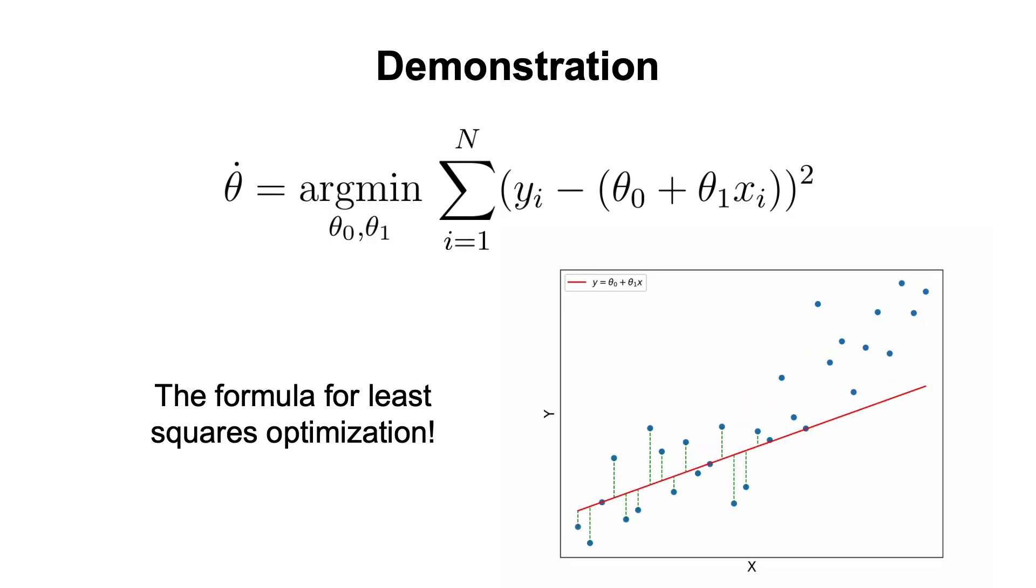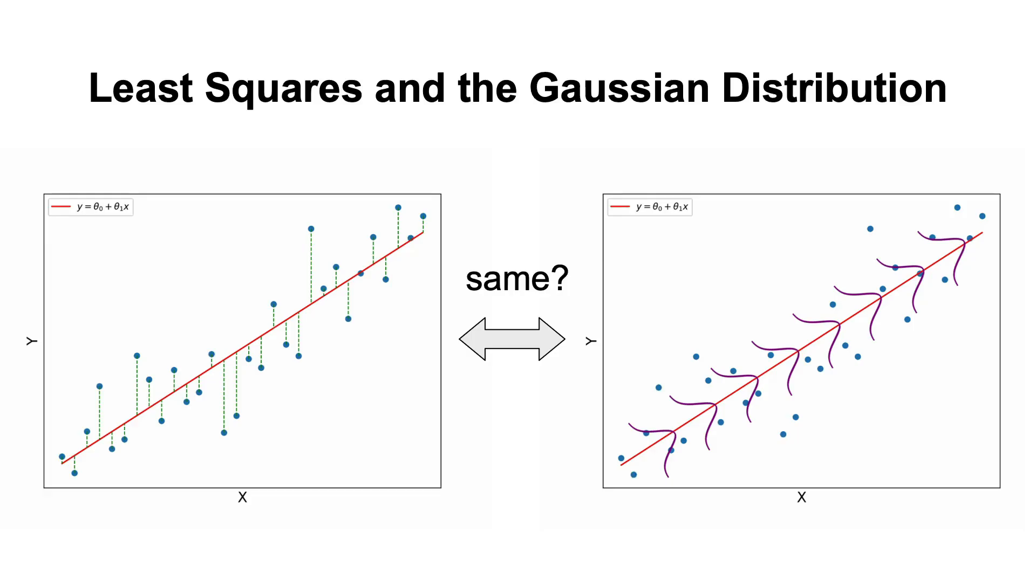which is exactly the optimization formula used in least-squares. So, what this tells us is that the least-squares method and the maximum likelihood estimation under a Gaussian assumption are equivalent.